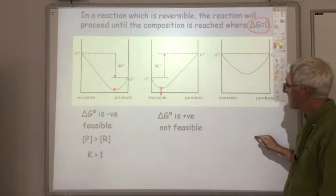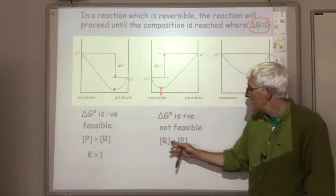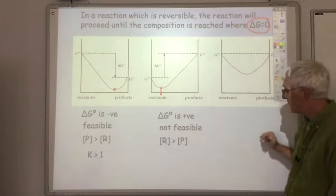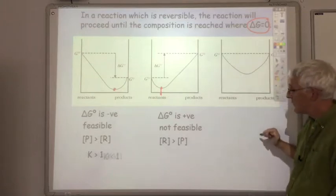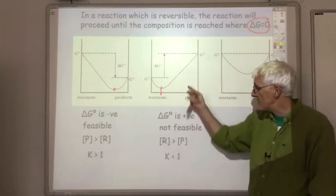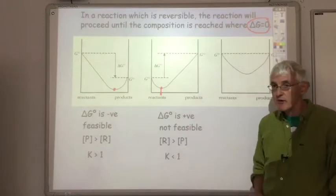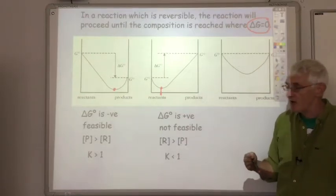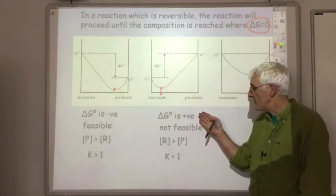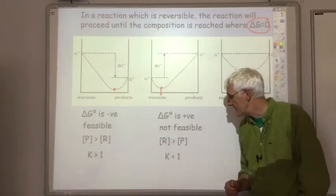At equilibrium, the concentration of reactants is greater than the concentration of products, which means that the equilibrium constant for this equation will be less than one. So again, you get the relationship: delta G is positive, so you have a very small equilibrium constant.